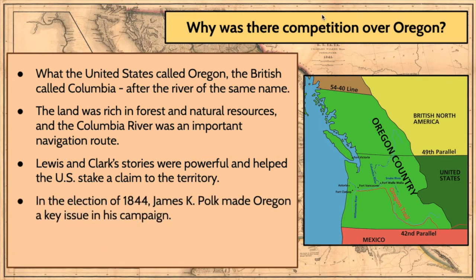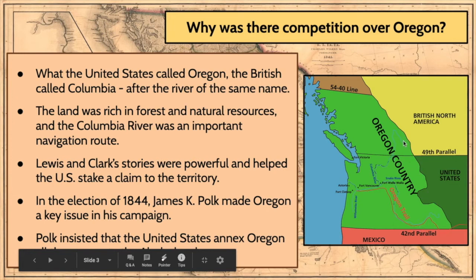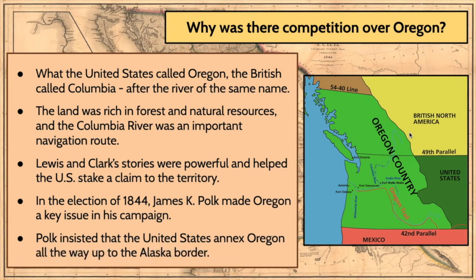In the election of 1844 — skipping ahead from Thomas Jefferson's 1800 election — James K. Polk made gaining Oregon a key issue in his campaign for president. He insisted that the United States annex Oregon all the way up to the Alaska border. So this entire area in light green, Polk wanted all of it for the United States. But we're going to find out what actually happened.